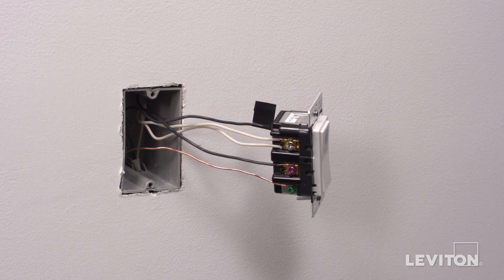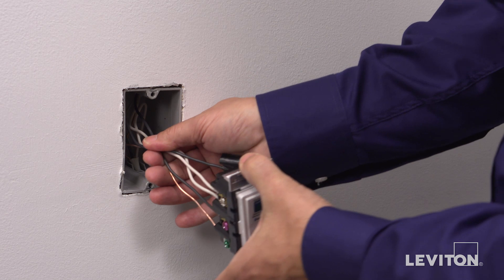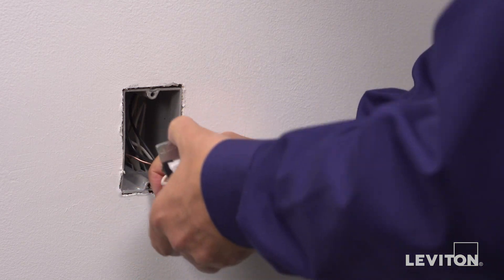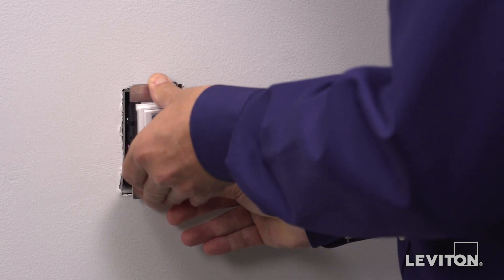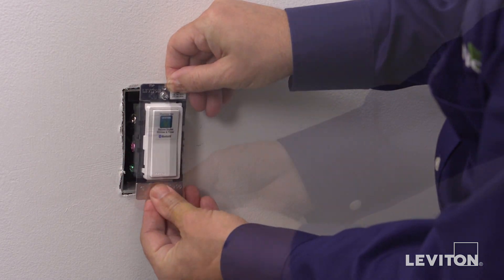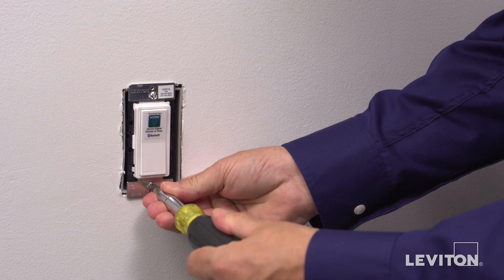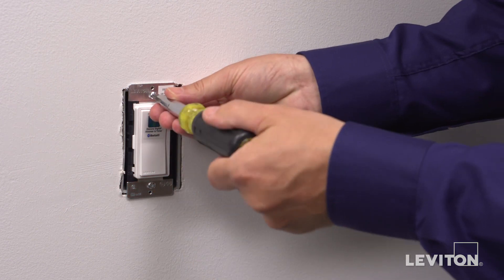The device is now terminated. Now that everything is wired, we will test the device prior to fully mounting in the wall box. Gently bend the wires and push them into the wall box. Partially screw in the mounting screws in the wall box mounting holes.